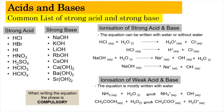Next, let's look at the common list of strong acids and strong bases for your syllabus. For strong acids, there are seven altogether. Strong acids from the halogen group include HCl, HBr, and HI — note that HF is not considered a strong acid. Other strong acids include nitric acid, sulfuric acid, chloric acid, and perchloric acid.